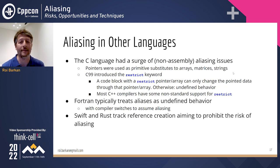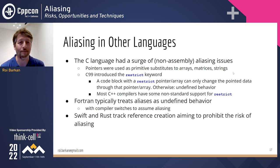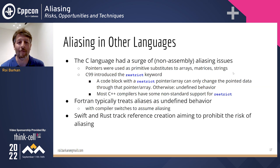Fortran typically treats aliases as undefined behavior, though some compilers added options to assume aliasing because some users needed it. Newer languages like Swift and Rust have complicated mechanisms to track creation of references to objects and slices of arrays, aiming to prohibit aliasing risk. For that reason, some code that compiles in C++ cannot compile in Rust, but Rust and Swift users face less risk of aliasing bugs.